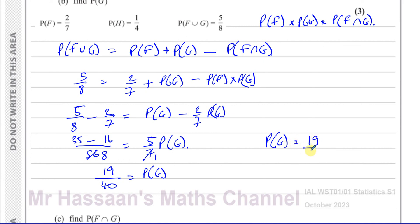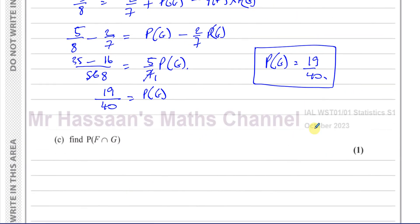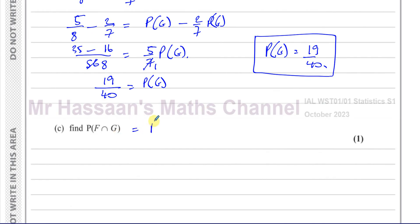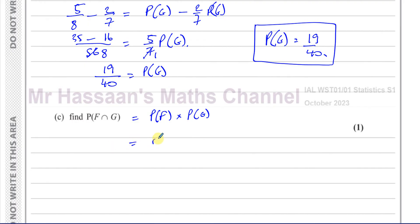Part C: find the probability of F intersection G. Since F and G are independent, P(F∩G) = P(F) × P(G) = (2/7) × (19/40). The 2 cancels with 40 to give 20, so P(F∩G) = 19/140. And there's the answer. You have to understand the definitions of mutually exclusive and independent events — that's very important throughout this whole question.